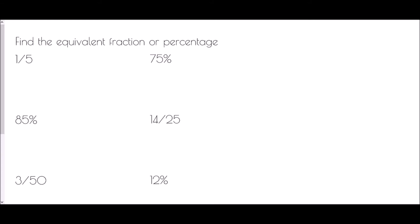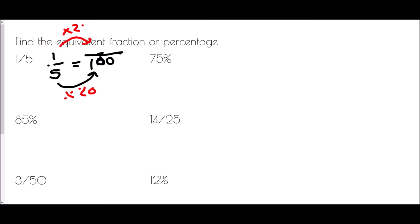Let's look at some examples. Find the equivalent percentage of one fifth. To make a fraction into a percentage, we want it over 100. What do I multiply 5 by to make 100? That would be multiply by 20. If I do that to the bottom of the fraction I also need to do it to the top, so 1 times 20 is 20. Therefore one fifth is exactly the same as 20 percent.